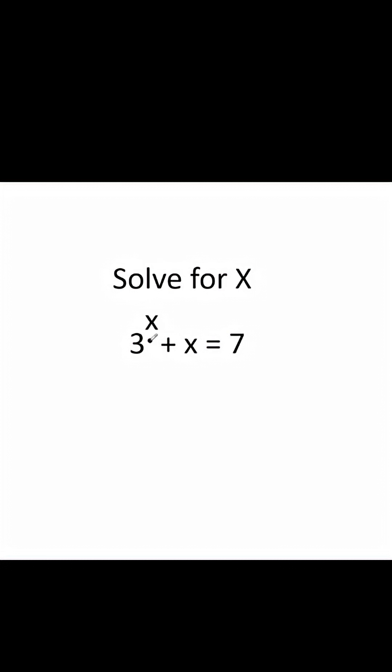Solve for x: 3 to the power of x plus x is equal to 7. There is a way to approximate this. There's no way to get the exact answer, but here I'll show you how to approximate it. So you can try 1 here.